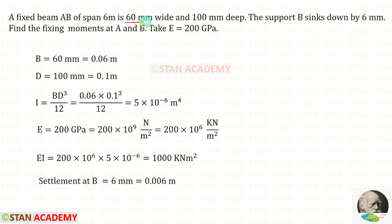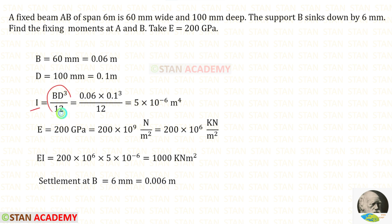Let us convert the breadth and the depth into meters by dividing them by 1000. For the breadth we will get 0.06 meters and for the depth we will get 0.1 meters. Now let us find the moment of inertia I using the formula bd³/12. Applying the breadth and depth, the moment of inertia is 5 × 10⁻⁶ m⁴.